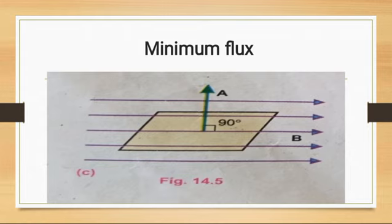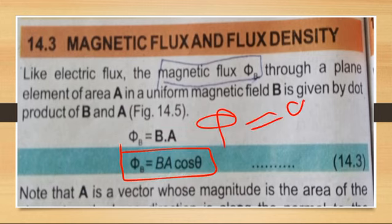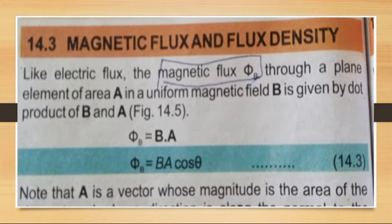So cos 90 degrees. Going back to the basic formula, phi B equals B A cos theta, and now theta is 90 degrees. Putting in 90 degrees: phi B equals B A cos 90, and cos 90 is 0 while cos 0 is 1, sin 90 is 1 and sin 0 is 0. Therefore phi B equals zero, which is the minimum value. We have now calculated maximum flux, minimum flux, and the value of flux in between maximum and minimum.